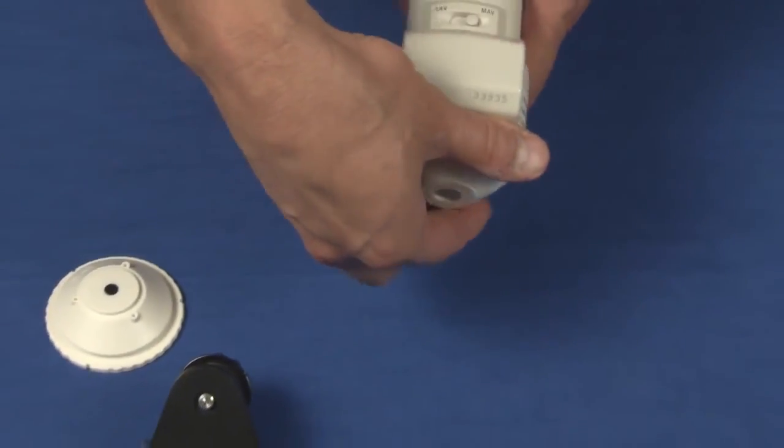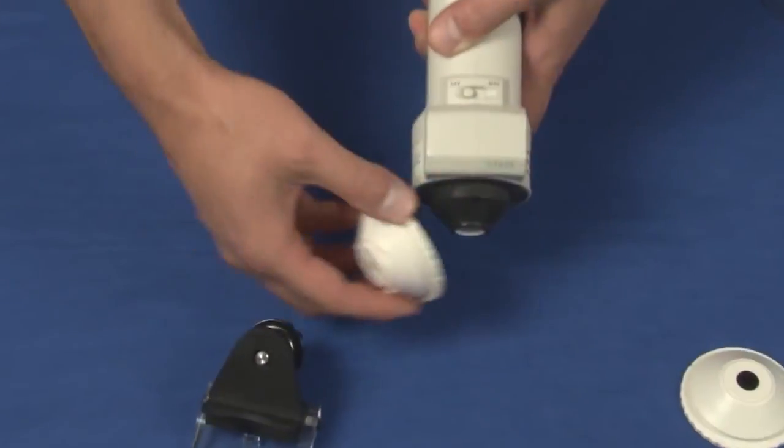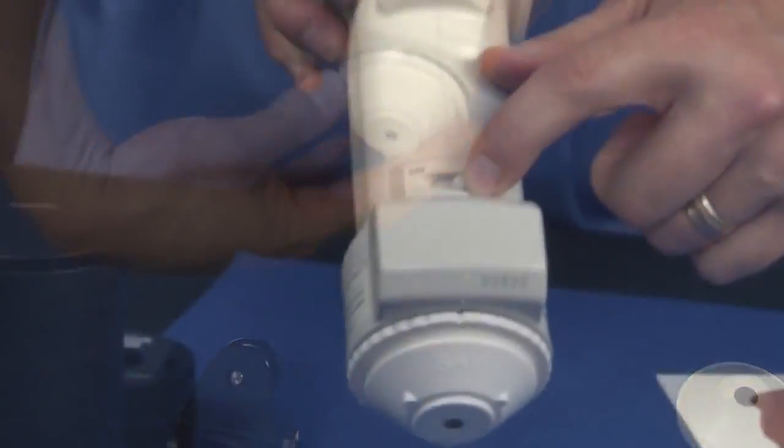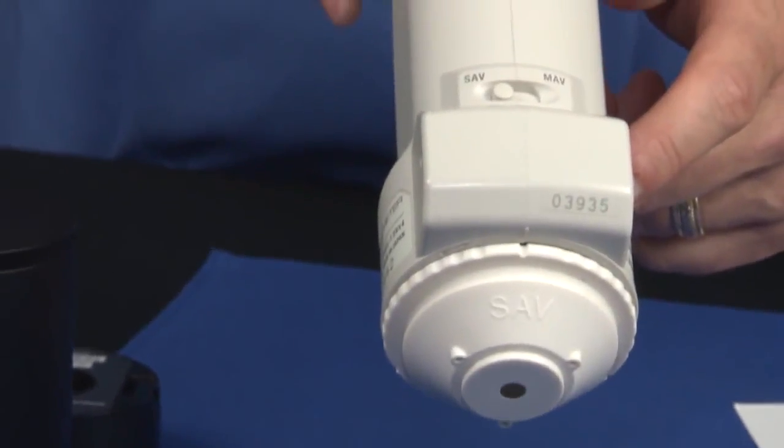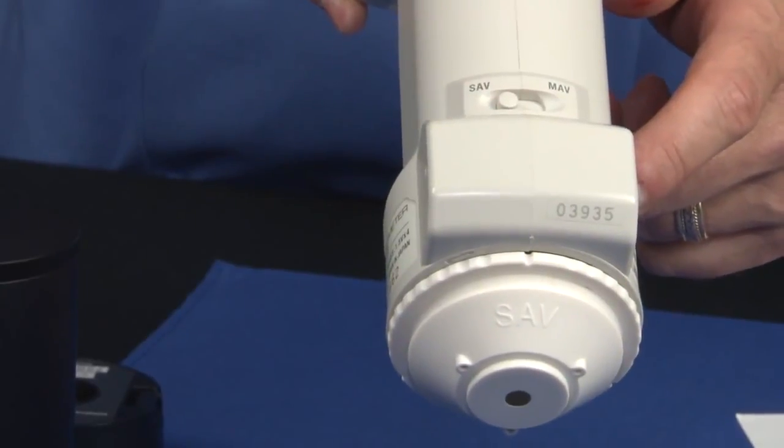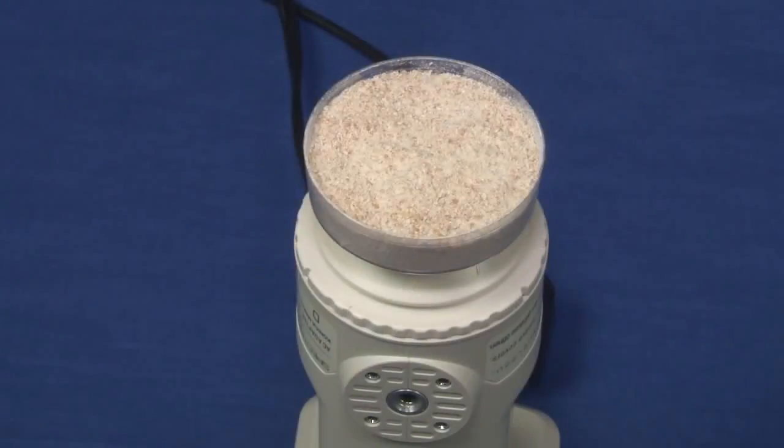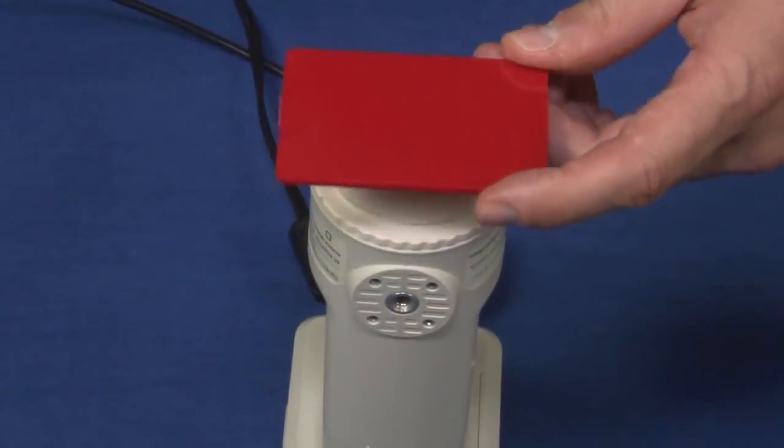The measurement aperture is selectable between 8 mm and 3 mm according to sample size. For example, the 8 mm is suitable for measuring the average of non-uniform samples, and the 3 mm will measure uniform samples.